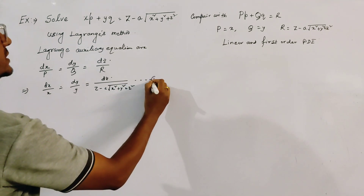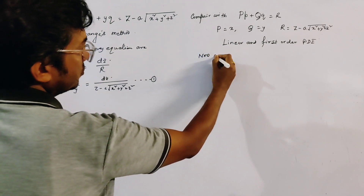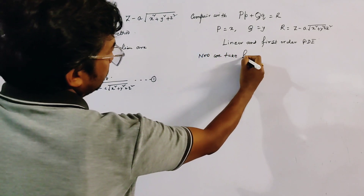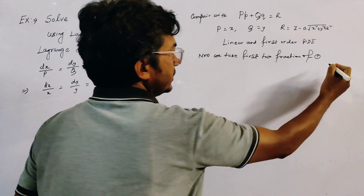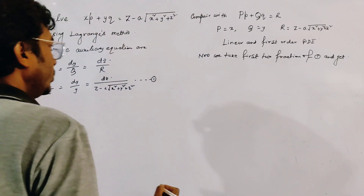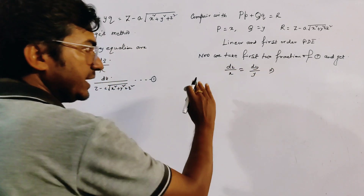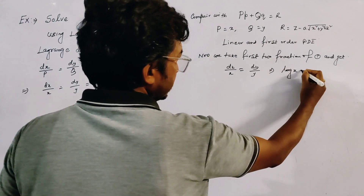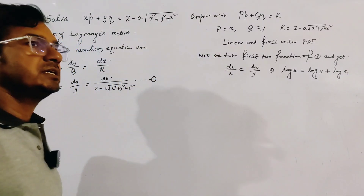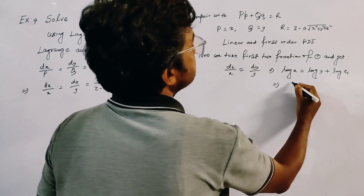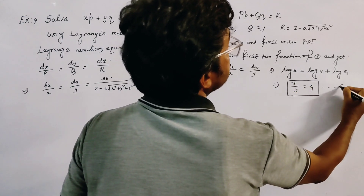We take the first two fractions of equation 1: dx/x = dy/y. Integrating, we get log x = log y + log c₁, which gives x/y = c₁. We name this relation number 2.